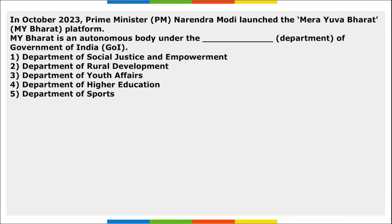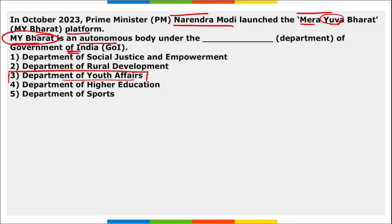In October, Prime Minister Narendra Modi launched the Mera Yuva Bharat platform (MyBharat), an autonomous body under the Department of Youth Affairs of the Government of India. This platform will encourage youth participation in national building efforts. The event was held at Kartavya Path, New Delhi. It is also the result of the Meri Maati Mera Desh campaign and Amrit Kalash Yatra.